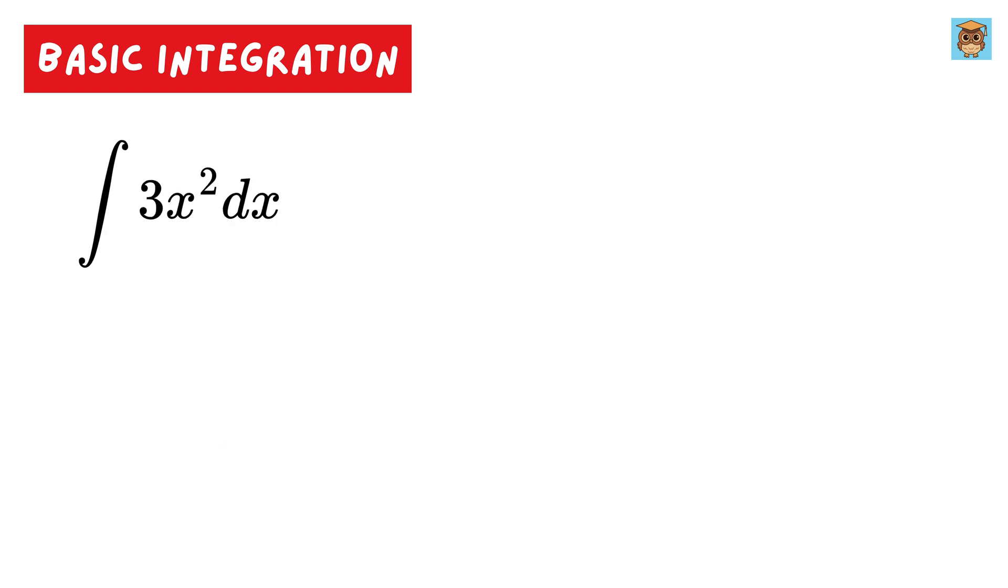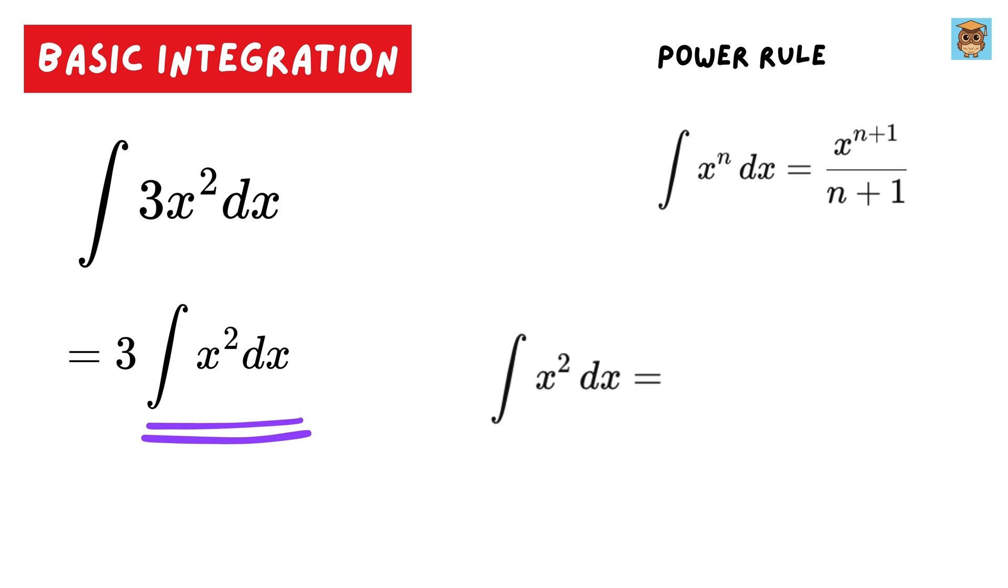So this is our first question. We will apply this power rule to solve it. So first take this 3 outside and solve for this remaining part. Integral of x square equals x to the second power plus 1 over 2 plus 1, or x cube over 3. Now multiply this 3 with it to make it as x cube.